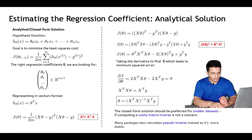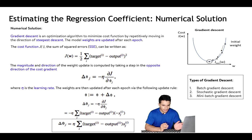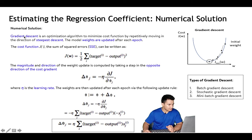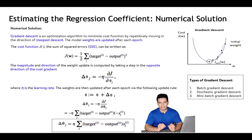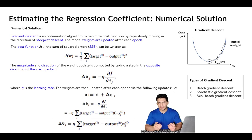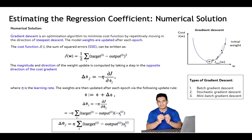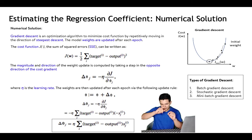Now let's move to the numerical solution. It is an iterative process where we make guesses and adjust each time. The approach used is gradient descent. When we want to minimize a function iteratively we use gradient descent; when we want to maximize we use gradient ascent. Gradient refers to the slope dy/dx, and descent means moving in the opposite direction of the gradient to minimize the loss.